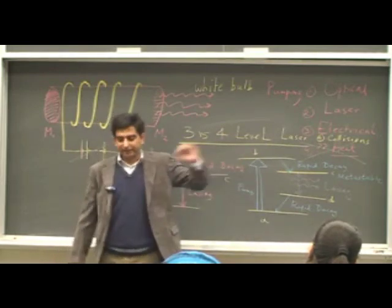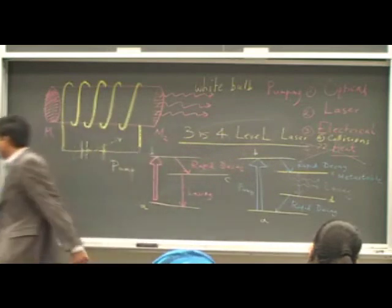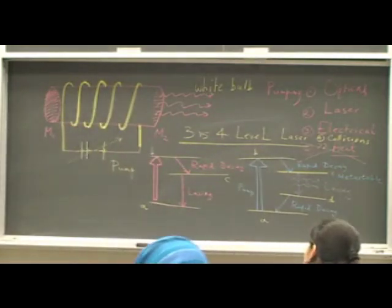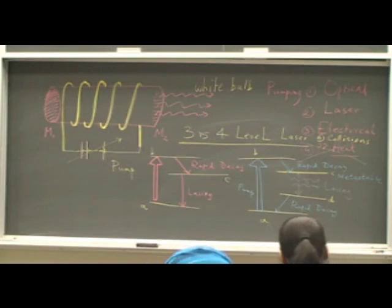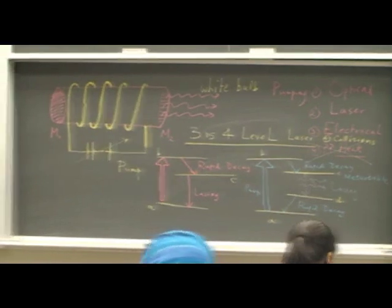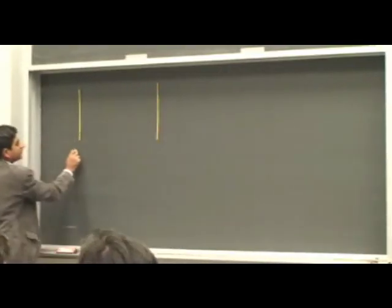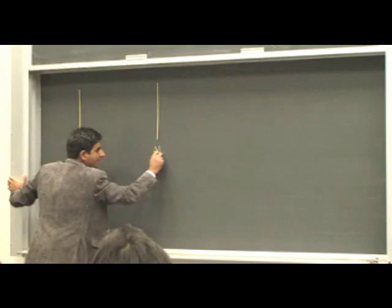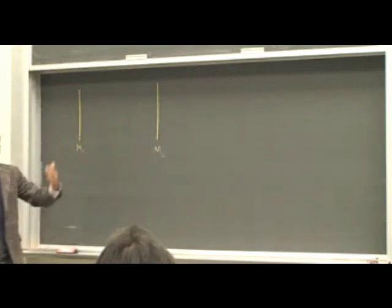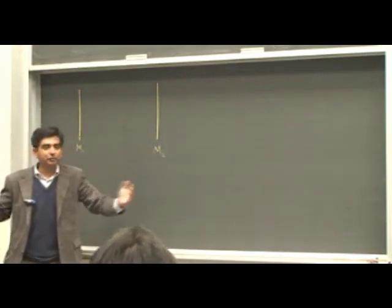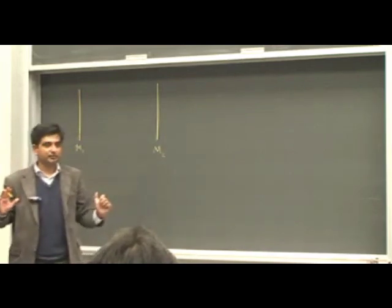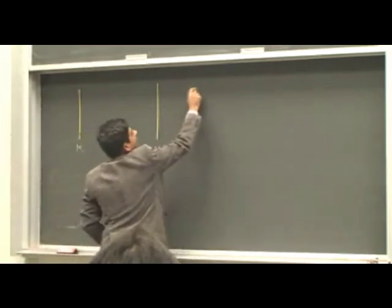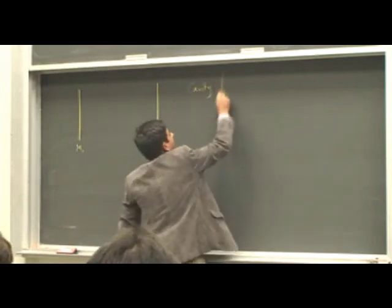Now the photons that are emitted in the laser. Let's draw a schematic diagram of a laser. You have two mirrors, M1, M2 and in between M1 and M2, we have what is called a cavity. We call it a cavity or a resonator.